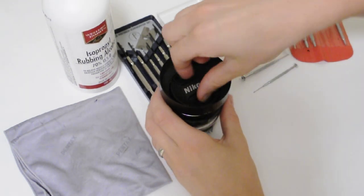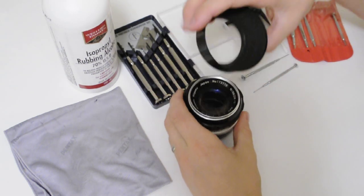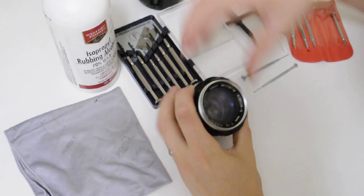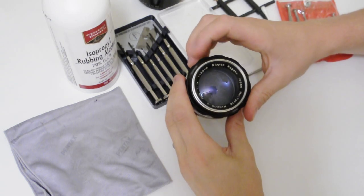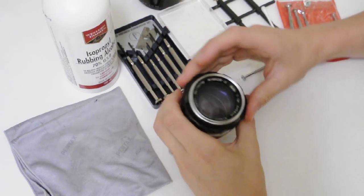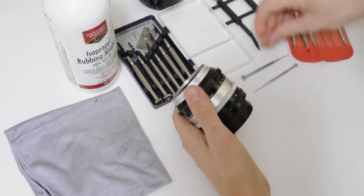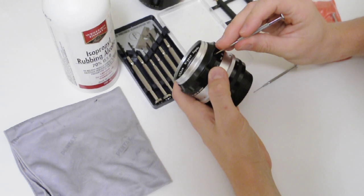In this video I'm going to show you how to clean the aperture oil off of a 58 millimeter 1.4. This is the Nikkor S version. First thing you want to do is undo these three screws along the focus ring.